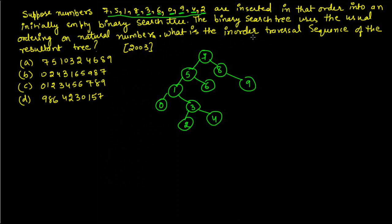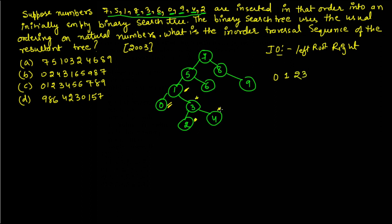They are asking for the inorder traversal sequence. Inorder is left-root-right. Traversing the tree gives: 0, 1, 2, 3, 4, 5, 6, 7, 8, 9. Checking the options, option C is correct.